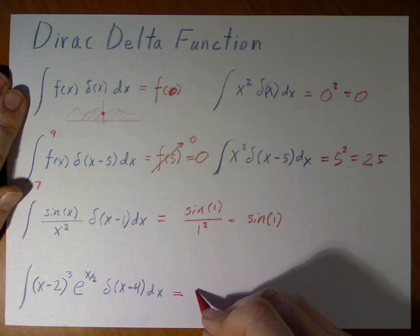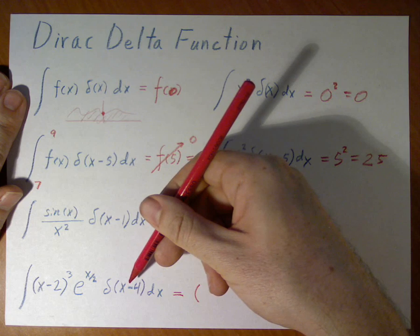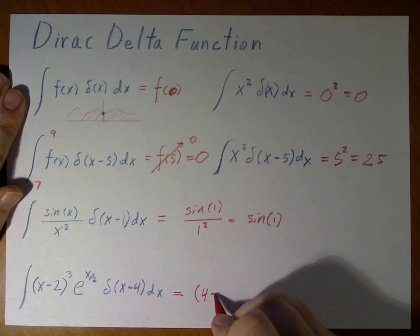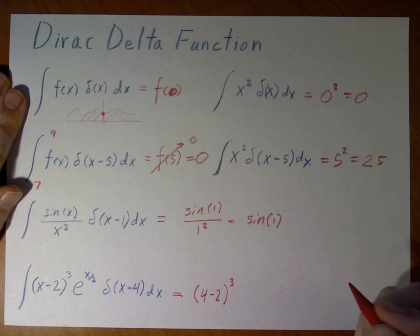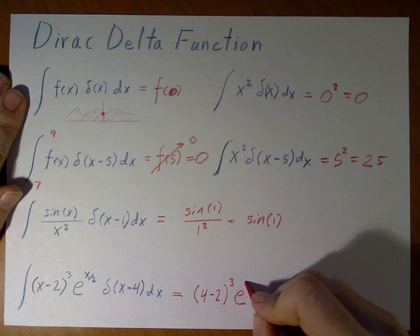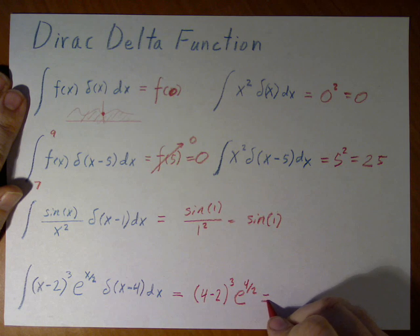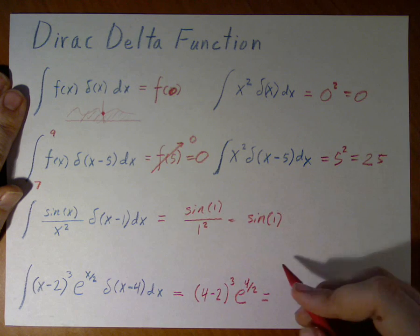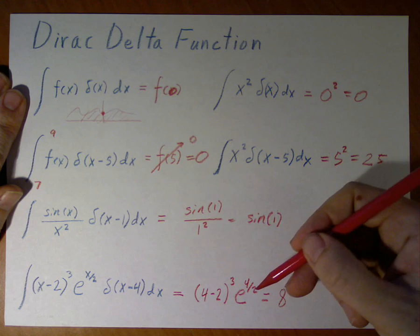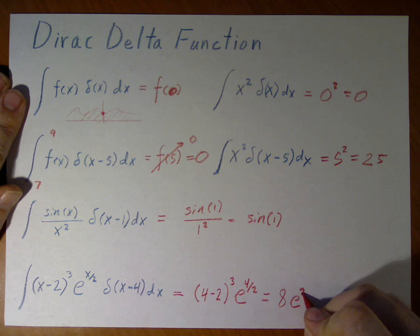...we simply evaluate at x equals 4. So I do 4 minus 2 cubed, e to the power of 4 over 2. If I simplify this, 4 minus 2 gives me 2 cubed, gives me 8. e to the power of 4 over 2 simply becomes e to the power of 2.